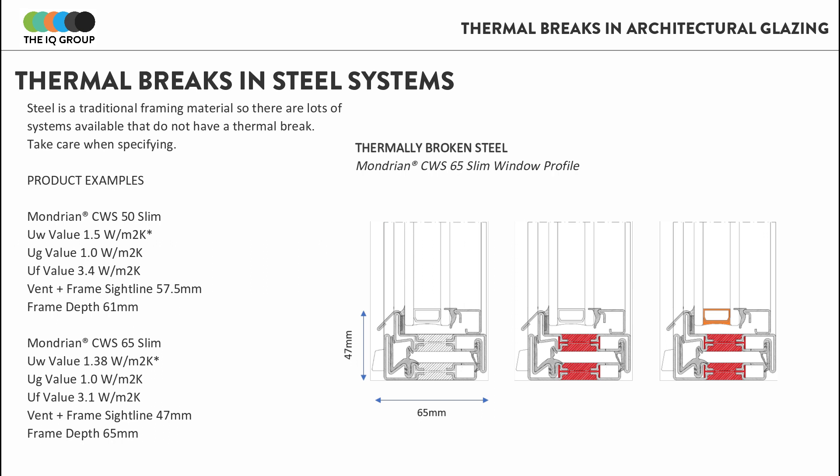For better thermal insulation in a steel frame, the Mondrian CWS 65 slim system uses a slightly different thermal break material, which reduces the UF value and gives a slightly better overall thermal performance. You would normally be looking at UW values from about 1.4 W/m²K with this type of thermally broken steel system.